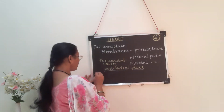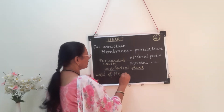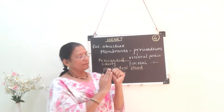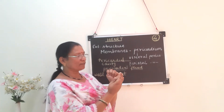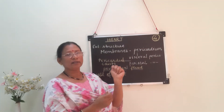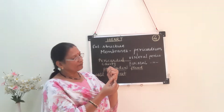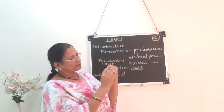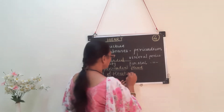Now we study the actual wall of the heart, inside the pericardium. The heart is a hollow muscular organ with a hollow cavity inside. The wall of the heart is made up of three layers.